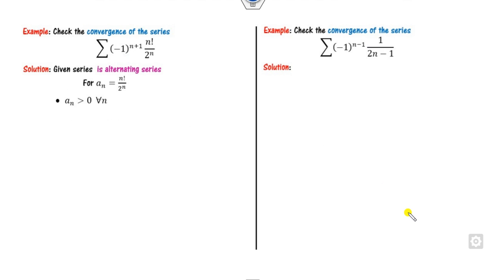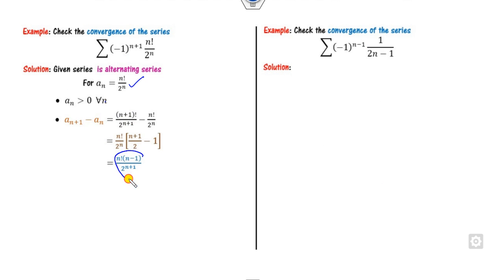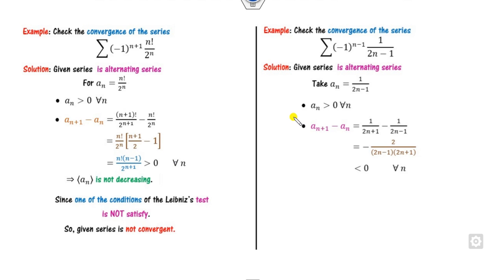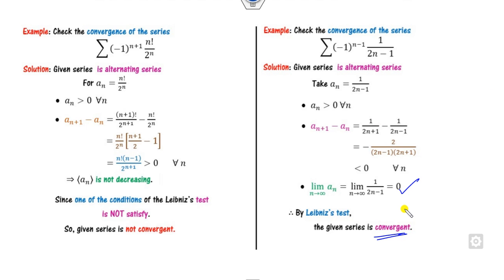For the last example here: a_n is positive. Taking the derivative, it is less than 0 — decreasing — and applying L'Hôpital's rule to the limit gives 0. Therefore it is convergent. For another example: a_n is always positive, but computing a_{n+1} minus a_n and factoring shows a positive result for n ≥ 1, meaning it is non-decreasing. So the condition is not satisfied and the series is not convergent. For the final case, a_n is also decreasing — the derivative is minus 2/(2n-1)², which is less than 0, and the limit is 0, so it is convergent.